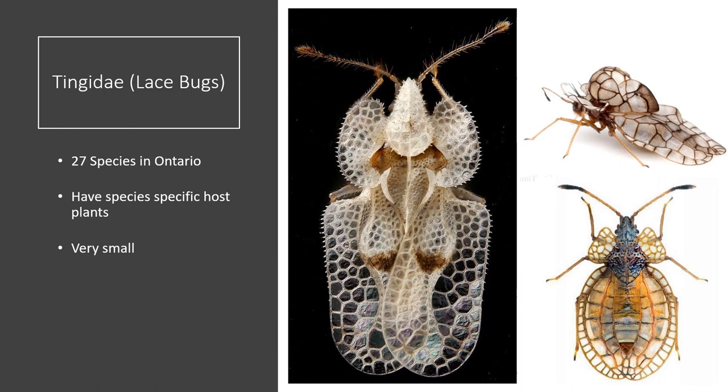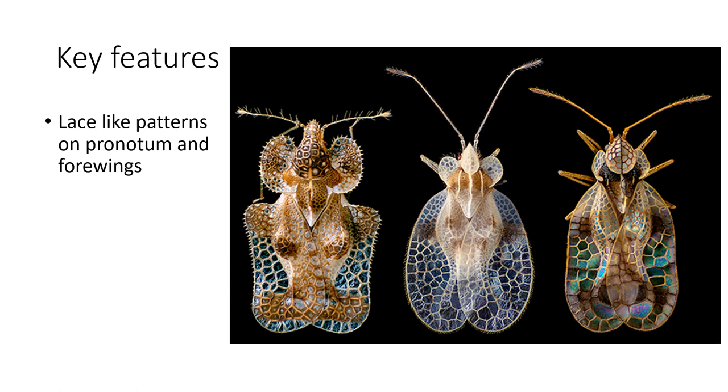Tingidae — lace bugs. These are very pretty bugs. There are 27 species in Ontario. They have species-specific host plants and are very small. Key features: they have lace-like patterns on their pronotum and forewings, and they have slender and flattened bodies.